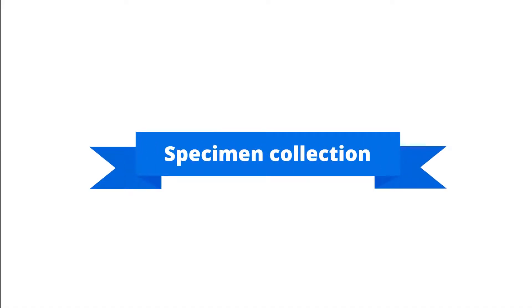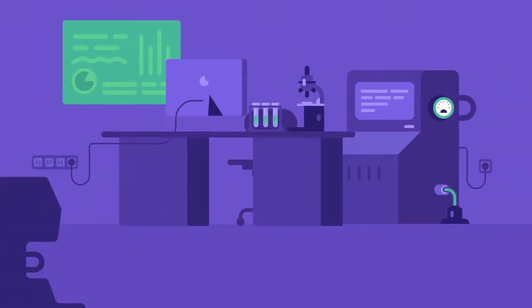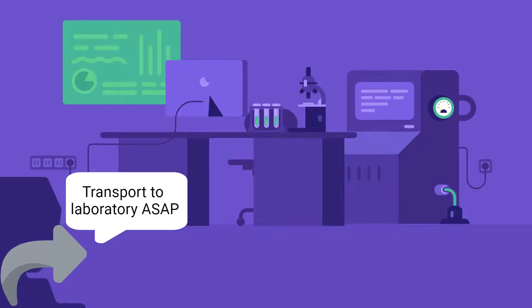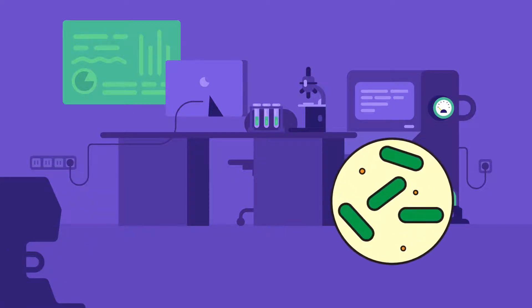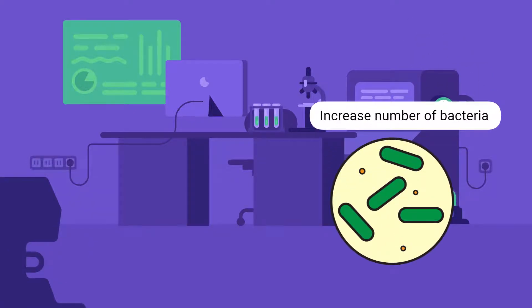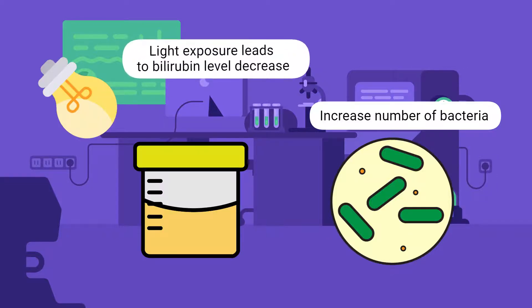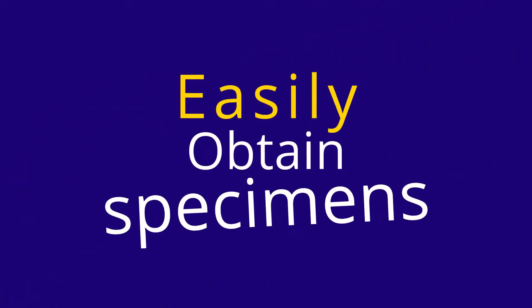Prior to urine analysis, a clean urine sample is collected into a specimen cup and brought to the laboratory for testing. It is best to transport it to the laboratory as soon as possible, because delaying testing could alter the results. For instance, bacteria could multiply while the specimen is awaiting testing, and bilirubin levels can change due to light exposure. Generally speaking, urine is one of the easiest specimens to obtain.